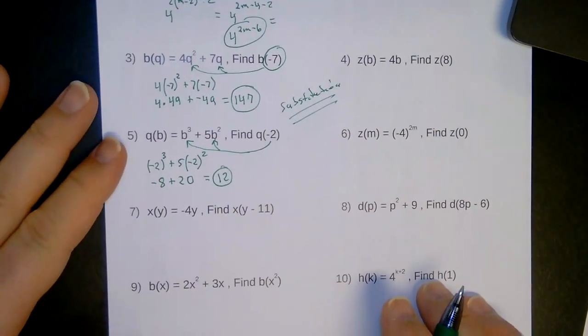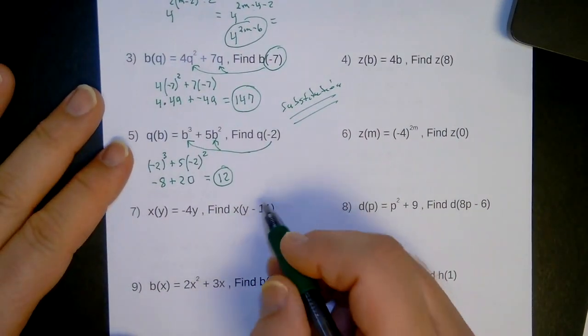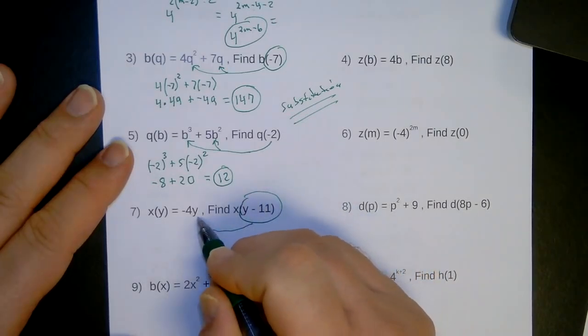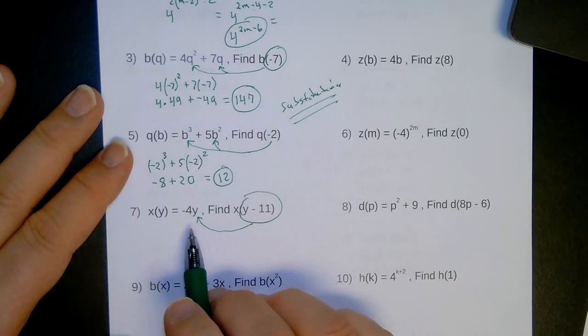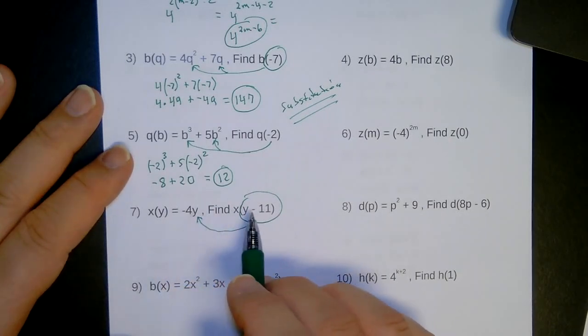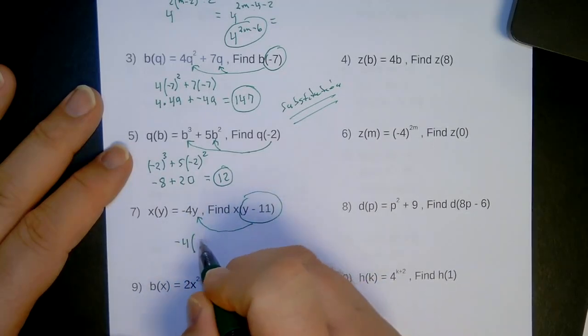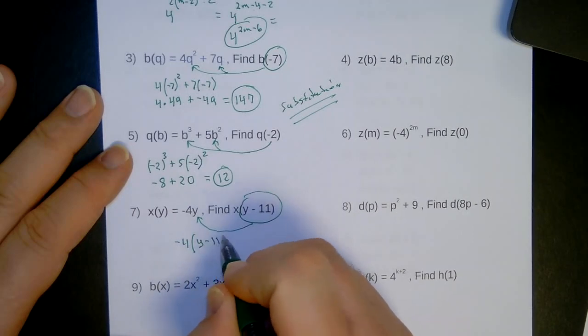Alright, number 7. Now it gets a little tricky here because I got all of this to substitute in right there. So that means wherever I see a y, I'm putting all of this in, both the y minus 11. So this turns out to be negative 4, parentheses, y minus 11.